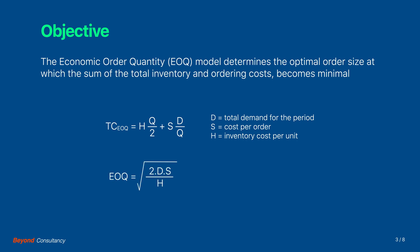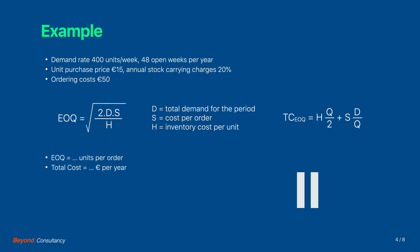On the next pages we will go through an example. Assume a rate of demand of 400 units per week and that we have 48 open weeks per year. The unit purchase price is 15 euro and the annual stock carrying charges are 20 percent. The ordering costs are 50 euro per order. The questions are: what is the optimal order lot size and what are the corresponding annual costs?